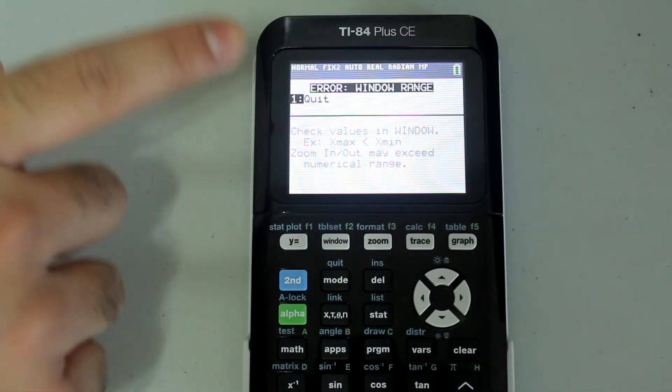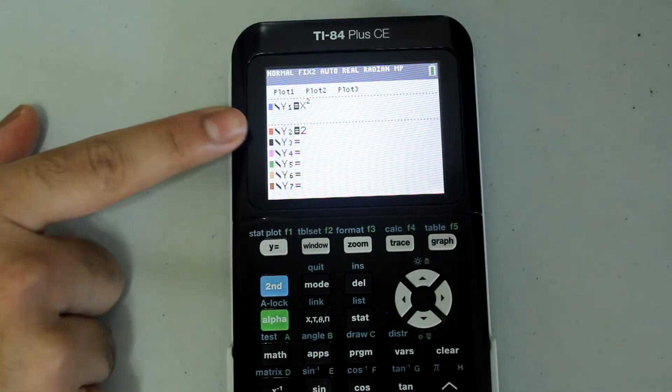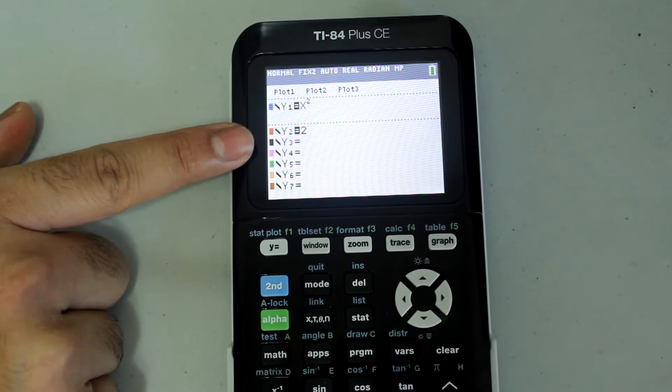First, let's exit this error message by pressing enter. If I press y equals, I can see that my y1 is equal to x squared, and my y2 is equal to 2.